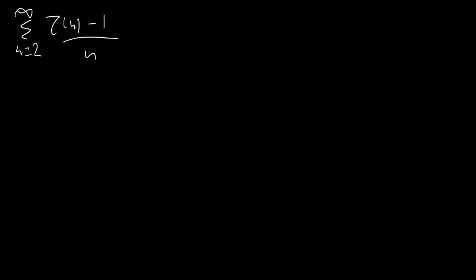For most of this video we're going to be interchanging the order of summation a lot, and that's something that generally needs a little bit of justification since these are all infinite sums. However, we're going to assume that they work and check them numerically, especially because it's pretty easy to see that all of these series will converge. So the first one we're going to directly substitute in the definition of the Riemann zeta function. Let's remember that zeta of s is equal to the sum from n equals 1 to infinity of 1 over n to the s.